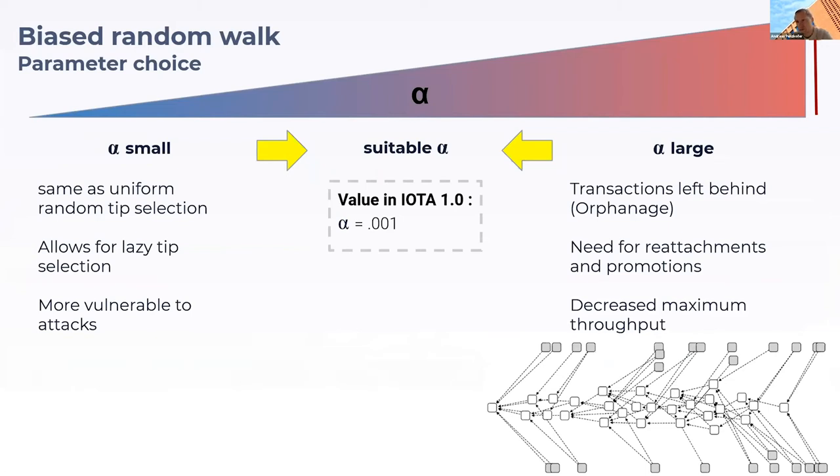If you choose alpha too high, you risk that you just choose the transaction of high weight and orphan transactions, which lowers the maximum throughput in the system because you have to reattach or promote transactions.